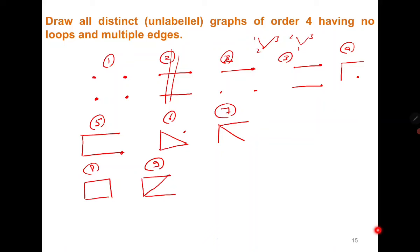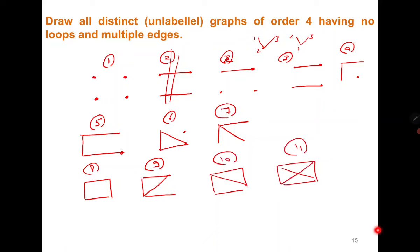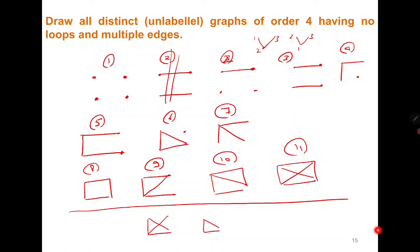Adding one more edge to graph five yields two possibilities: one is graph eight, and another by adding the edge differently gives graph nine. Adding to graph six always reproduces graph nine, so no new case. Adding to graph eight gives graph ten, and the final graph is graph eleven. Key observation: some graphs that look different are actually the same — for example, adding an edge to a triangle in two ways yields the same unlabeled graph.